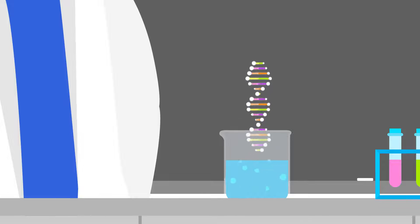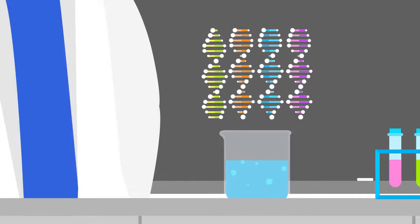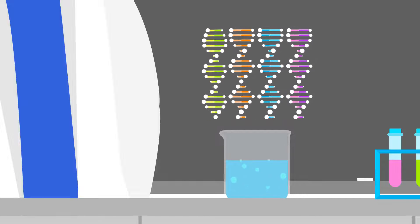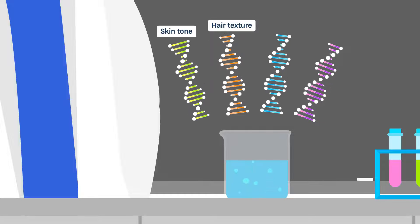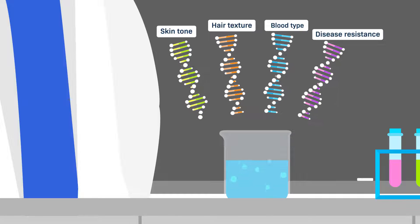First, let's define what we mean when we say that human genetic diversity is discordant. Discordant inheritance means that biological traits are inherited independently of each other. In other words, traits like skin tone, hair texture, blood type, or disease resistance are all inherited separately, not as a package.